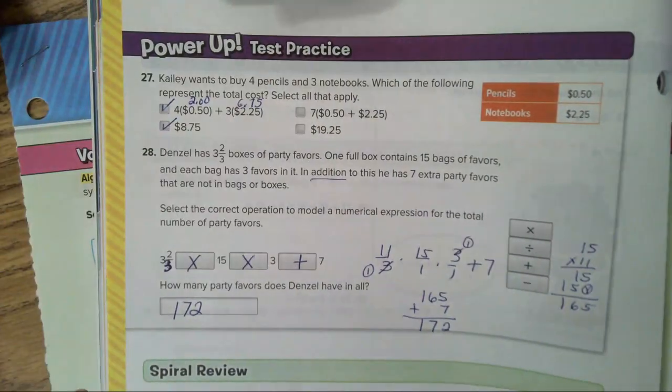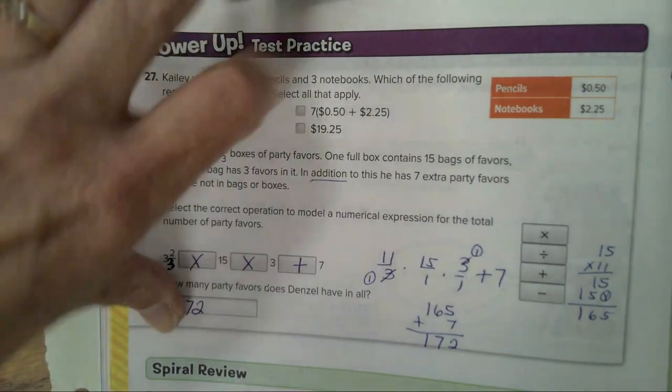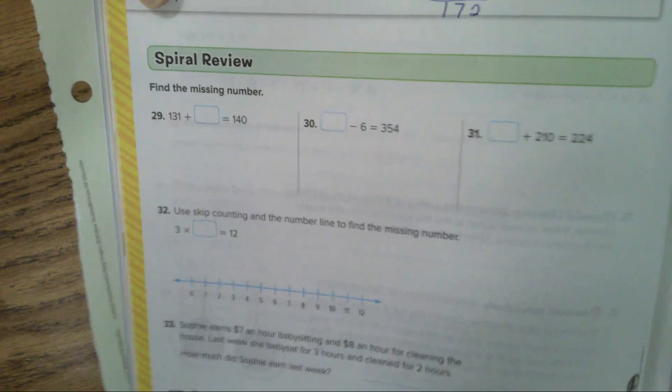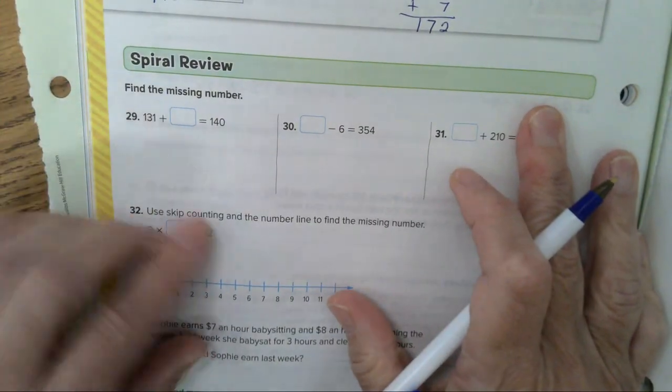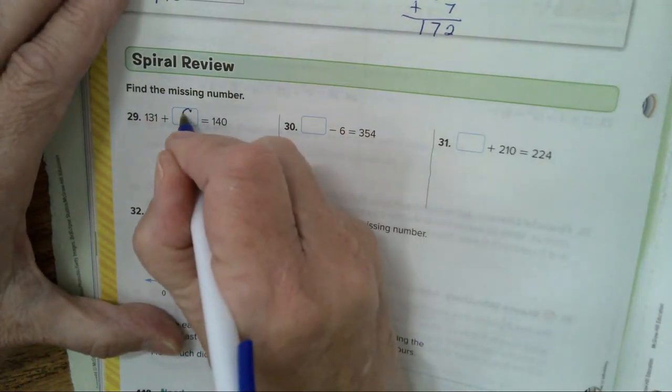Now let's go and look at 29 to 33. Finding missing numbers. In number 29, 131 plus what is 140? Well, this is easy. 9.